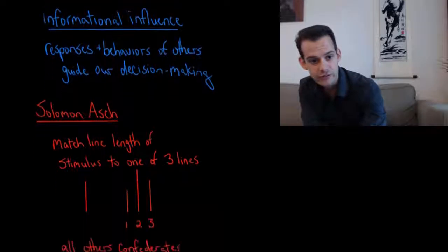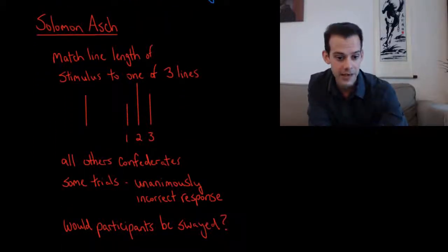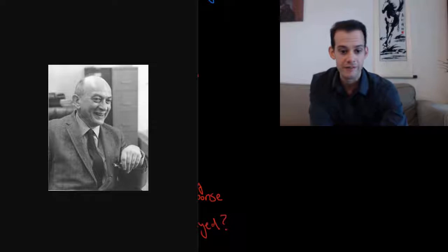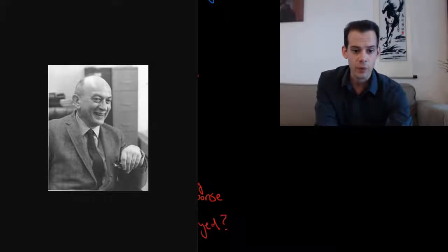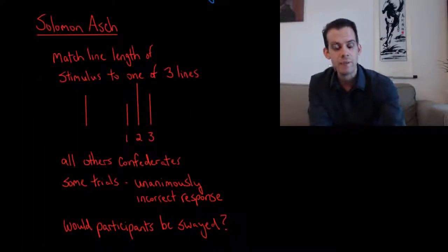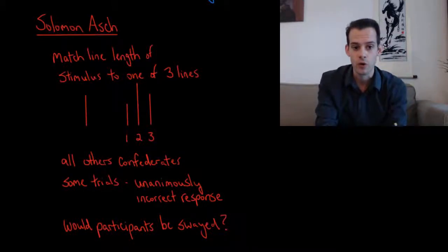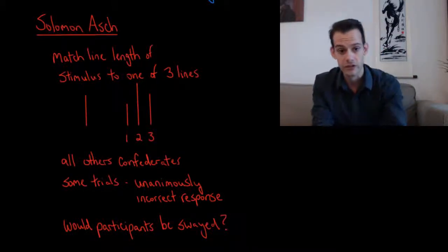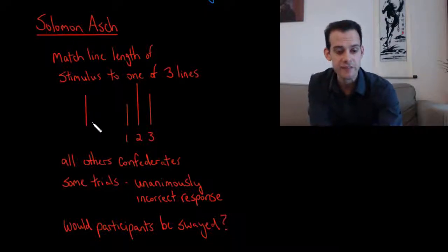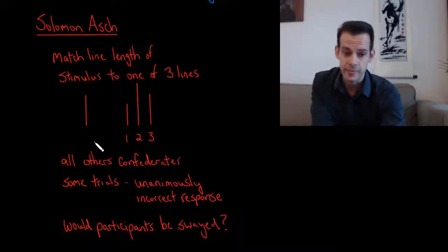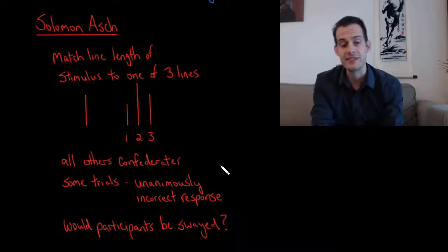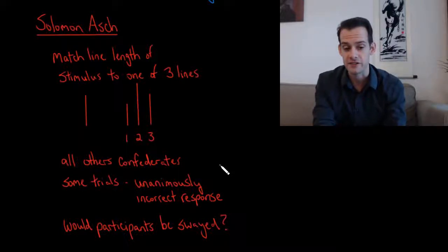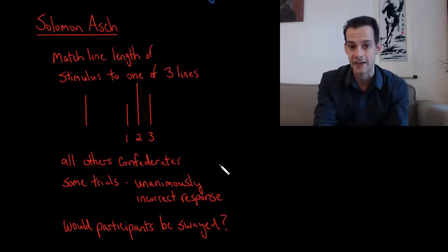Now, one of the most famous studies of conformity was conducted in the 1950s by Solomon Asch. And here's a picture of Asch here. And what Asch did was he asked participants to match a line length with one of three lines. So in this case here, this would be the stimulus and the participants would be asked to say the number corresponding with that line length. So in this case, the correct answer would be three. Now, the participants did this in a room with a group of other participants. But what they didn't know was that these five other participants were actually confederates who were in on the experiment.